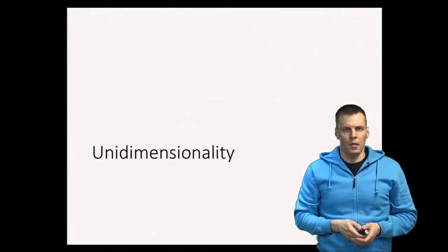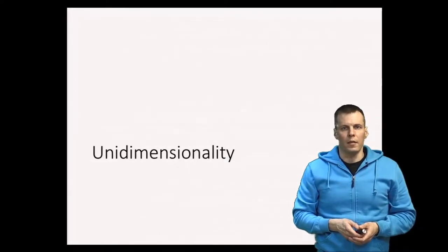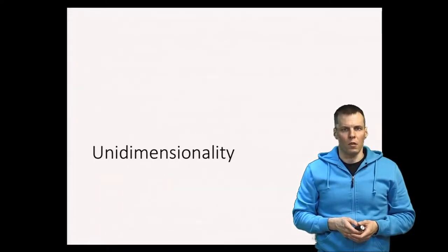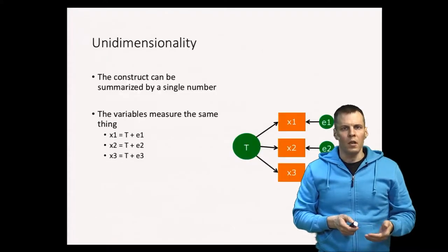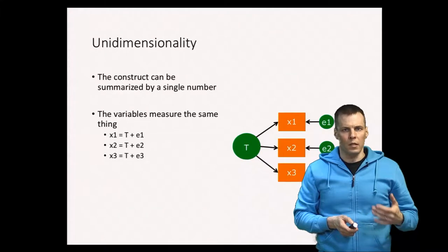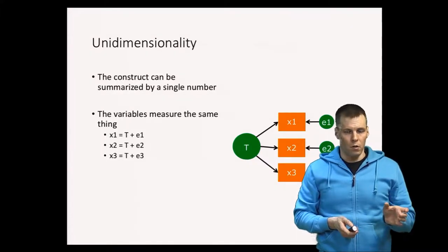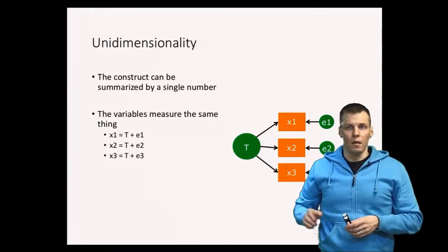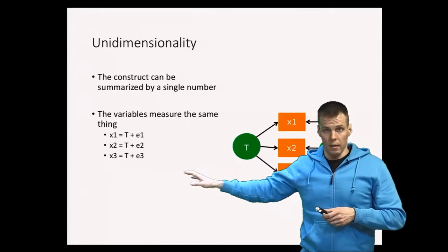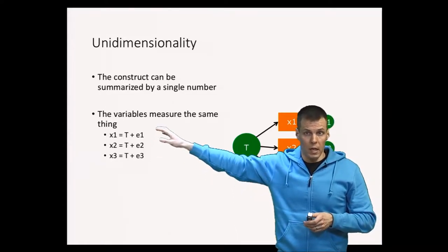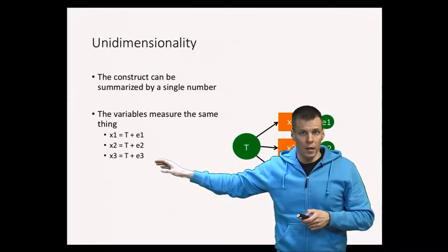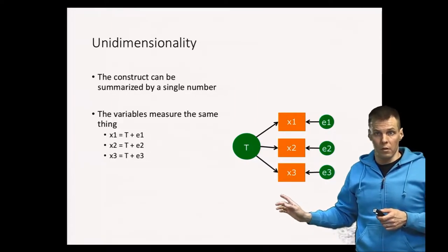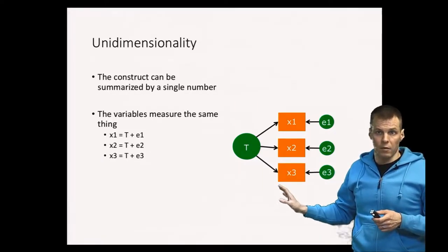One of the assumptions of classical test theory and all the reliability indices based on that theory is that the indicators of a scale are unidimensional measures of one construct. Unidimensionality basically means that we can meaningfully summarize the construct with a single number. So if we have multiple dimensions in a construct we need multiple numbers. Each indicator measures the same thing — in classical test theory that thing is t — and the indicators all capture t plus some random noise. This is the statistical model for unidimensional measurement, also known as the factor analysis model.